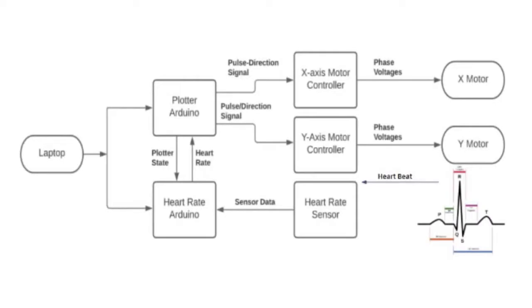Our design is comprised of two main subsystems. There is a subsystem that manages the plotter and a subsystem that manages the heart rate sensing. Each of those subsystems is controlled by a separate Arduino. These Arduinos are communicating between one another with a UART. So the heart rate sensor is sending the actual signal data to the plotter, and the plotter is sending back data about its current state.